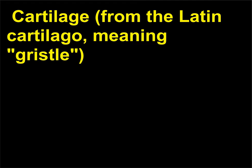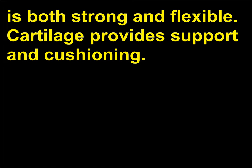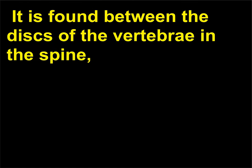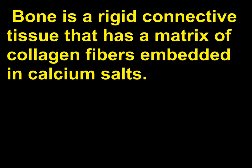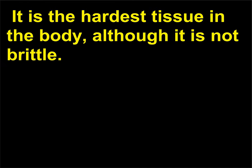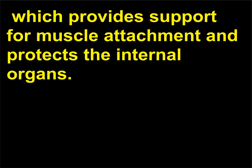Cartilage — from the Latin cartilago, meaning gristle — is a connective tissue with an abundant number of collagen fibers in a rubbery matrix. It is both strong and flexible, providing support and cushioning. It is found between the discs of the vertebrae in the spine, surrounding the ends of joints such as knees, and in the nose and ears. Bone is a rigid connective tissue that has a matrix of collagen fibers embedded in calcium salts. It is the hardest tissue in the body, although it is not brittle. Most of the skeletal system is comprised of bone, which provides support for muscle attachment and protects the internal organs.